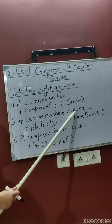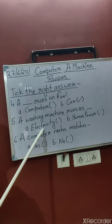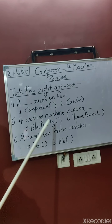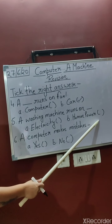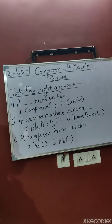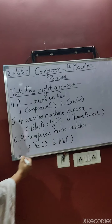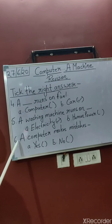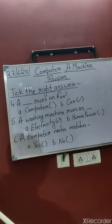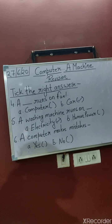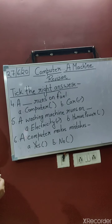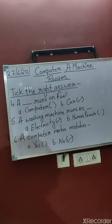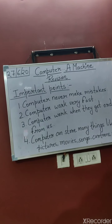Question six: a computer makes mistakes — yes or no? A computer never makes mistakes. So the answers are: machines make our work easy, a computer runs on electricity, a computer works very fast, a car runs on fuel, a washing machine runs on electricity, and a computer never makes mistakes.